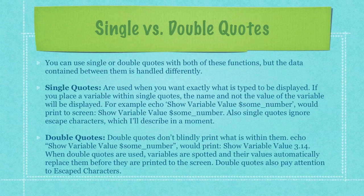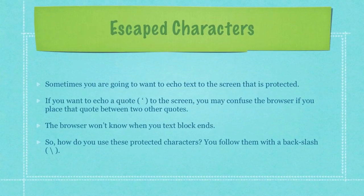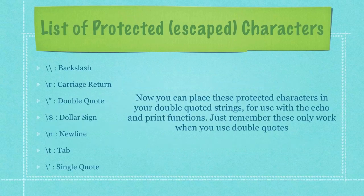Double quotes don't blindly print what is within them. Echo with double quotes in this instance would print 3.14 — when double quotes are used, variables are spotted and their values automatically replace them before they are printed to the screen. Double quotes also pay attention to escape characters. Sometimes you're going to want to echo text to a screen that contains protected characters. If you want to echo a quote to the screen you may confuse the browser if you place that quote between two other quotes — the browser won't know when your text block ends. You follow protected characters with a backslash. Here is a list of some protected or escaped characters. Just remember these only work when you use double quotes.